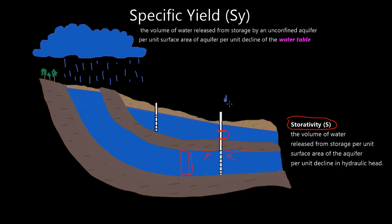If we lower the hydraulic head in this confined aquifer by one unit, not very much water comes out — just a little drop comparatively. Because what we're doing is collapsing the skeleton of this aquifer. We're releasing some pressure when we pump on it, causing the aquifer skeleton to compress, and the water expands slightly too. That's where our water comes from when we lower the potentiometric head by one unit. We're more reducing pressure than removing water from the system.